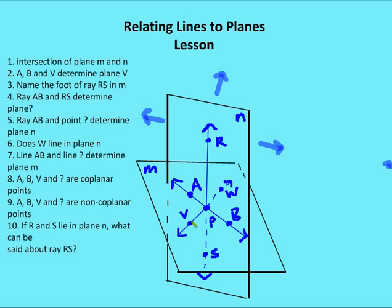Last question: if R and S lie in plane N, what can be said about RS? If R and S both lie in plane N, then line RS — or ray RS — is also found in plane N. Join us for more problems on relating lines to planes in the next edition of OttenMath.